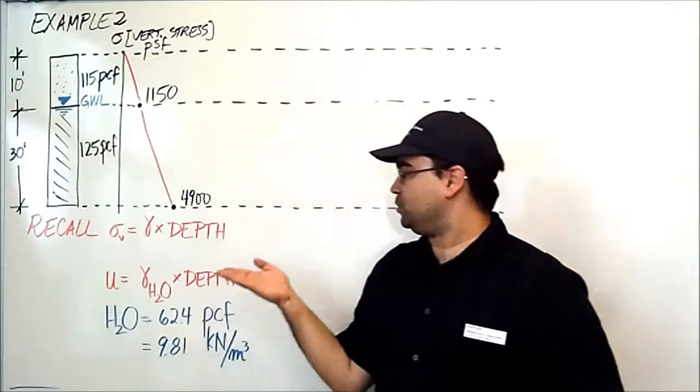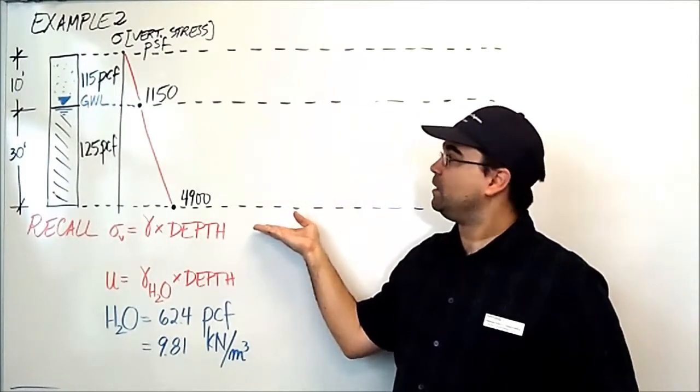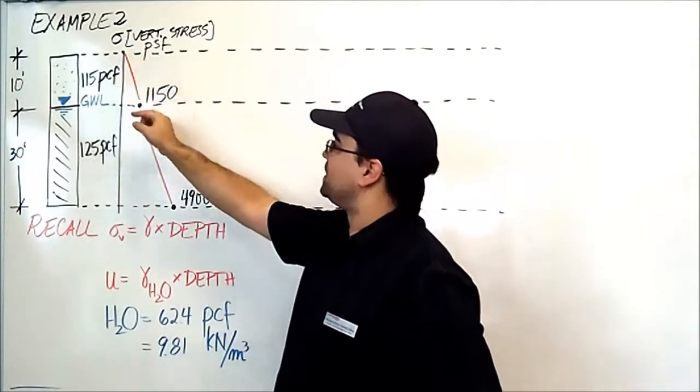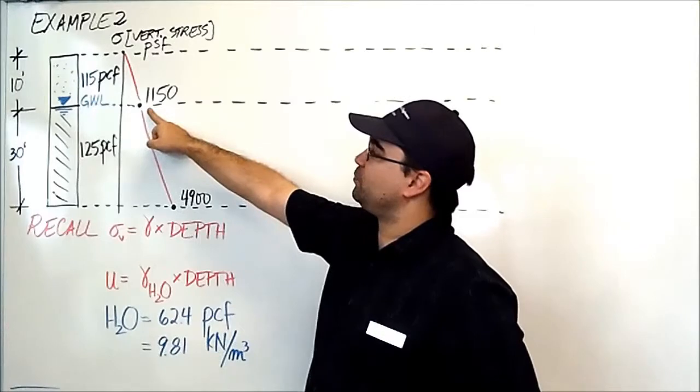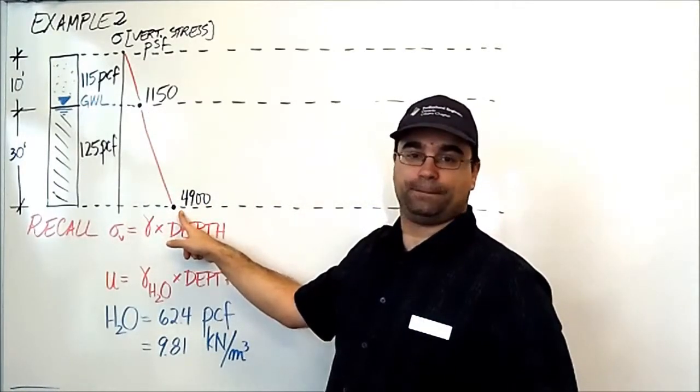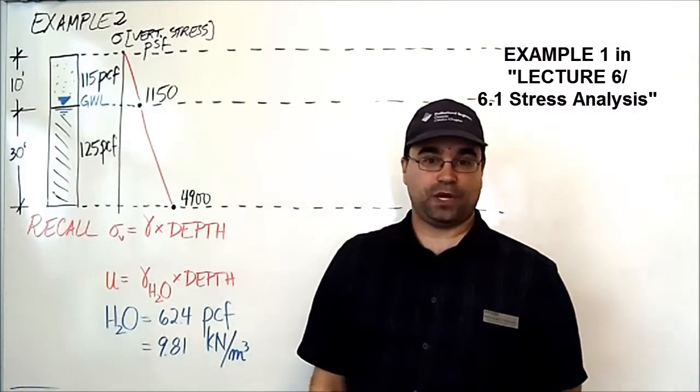In example one, we calculated using this formula, the vertical stress formula, what the stress distribution is from the surface at zero to the 10-foot interface to the bottom of the 40-foot borehole. If you want a reminder of how this was calculated, check out example number one.